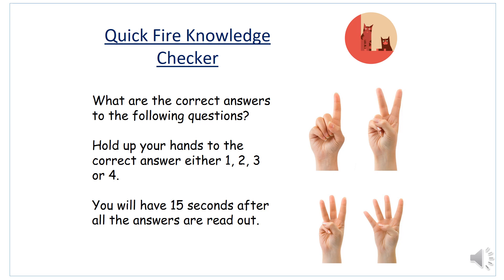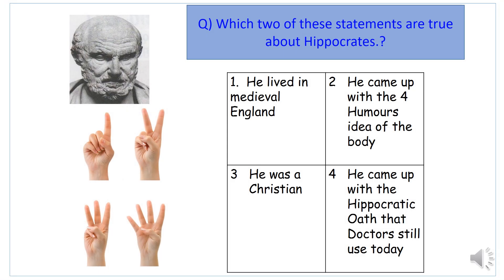To finish session one, here are some quick quiz questions. Listen to the options, pause the live lesson, decide which two statements are correct, then come back for the answers. Question one is about Hippocrates — which two of these statements are true? One: he lived in medieval England. Two: he came up with the four humours idea. Three: he was a Christian. Four: he came up with the Hippocratic Oath that doctors still use today.